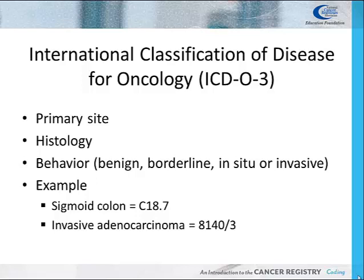For example, the primary site code for a sigmoid colon cancer is C18.7 — 18 for colon and .7 for sigmoid, a subcategory of the colon. An invasive adenocarcinoma is assigned the code 8140/3: 8140 identifies the cancer as an adenocarcinoma, and the 3 indicates the tumor behavior is an invasive malignant tumor. To learn how to assign primary site and histology codes, please go to the site and histology activity that is available.